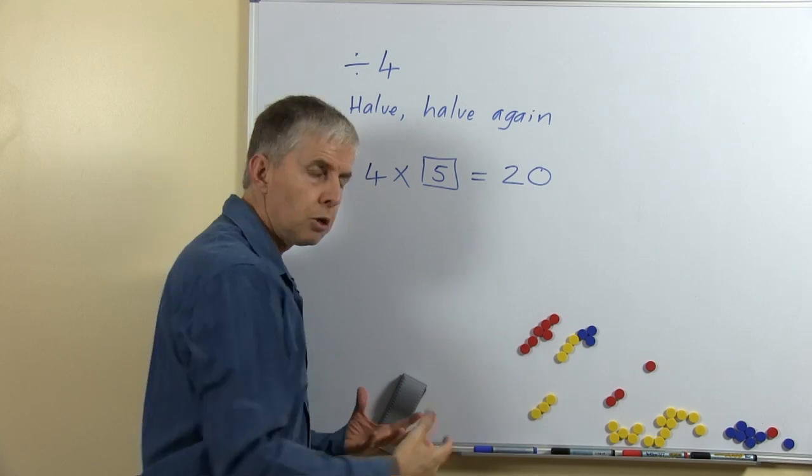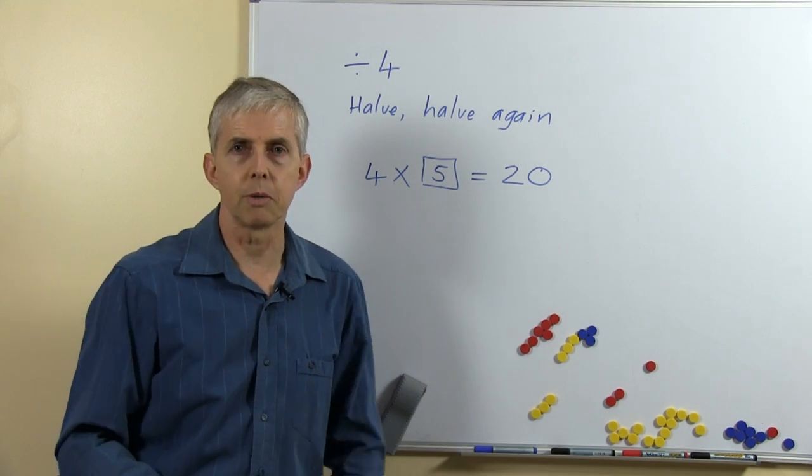So those are 2 straightforward strategies, halve a number twice or think of the multiplication number fact.